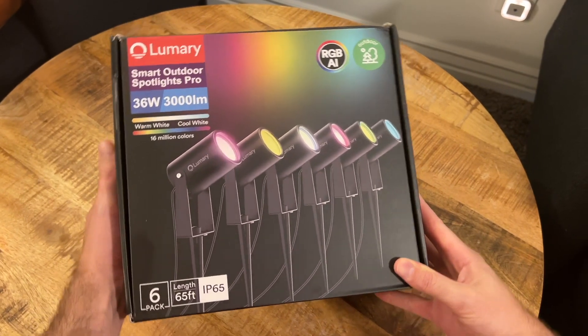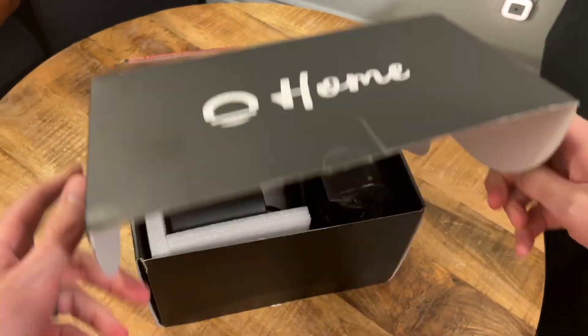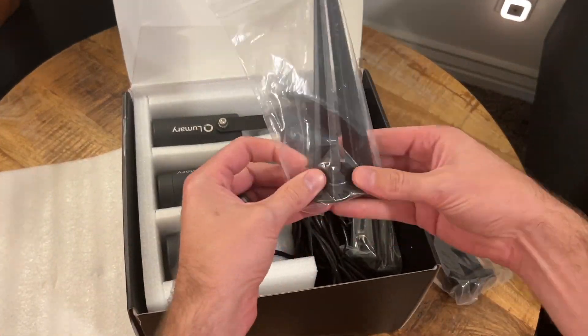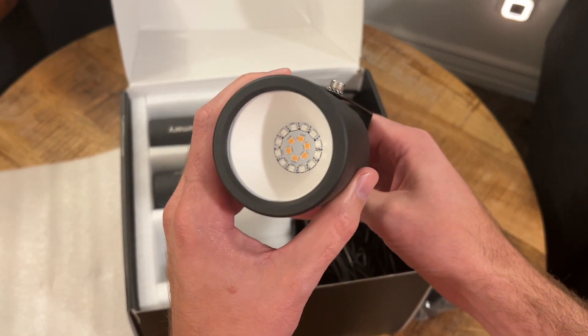Here is Lumary's Smart Outdoor Spotlight Pro product that contains RGBAI LED lights. Everything you need is included in the box including the stakes. And check it out! There's the color LEDs and the white LEDs right there inside the lamp.